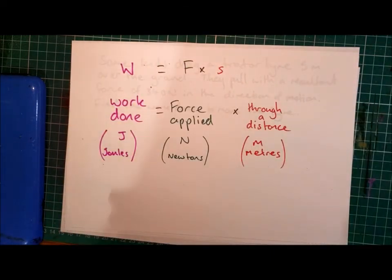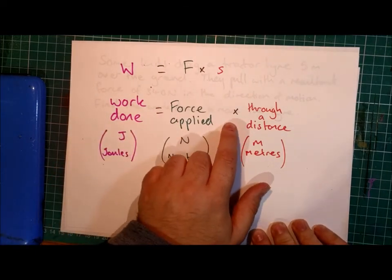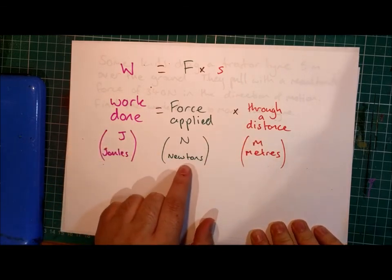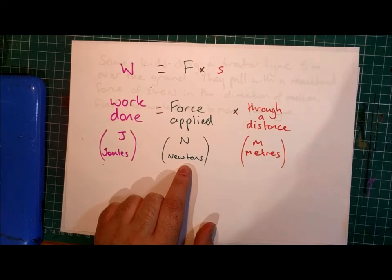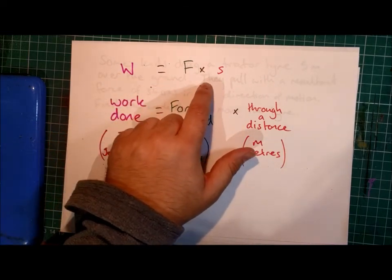The equation for work done is that work done equals the force applied multiplied by the distance travelled. Work done is in joules, force applied is in newtons, and the distance is in metres. In short form, you could write W equals F times S.